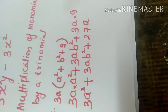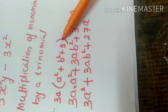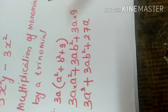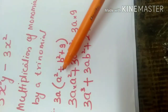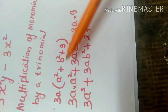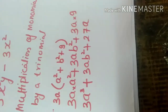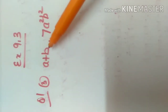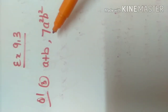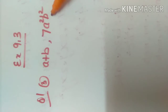That is how you multiply — the monomial is multiplied to each term of the polynomial. If the polynomial has more than three terms, the monomial is still multiplied to each term along with the sign. Now let's see Exercise 9.3, question number 1, the third option, where a plus b is multiplied to 7a squared b squared.